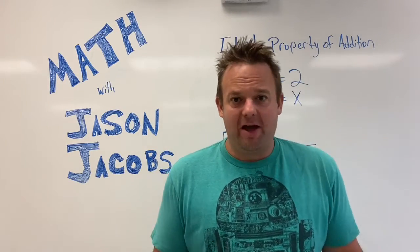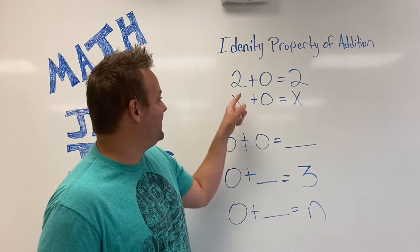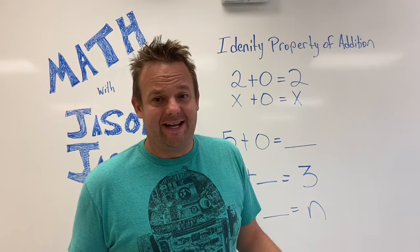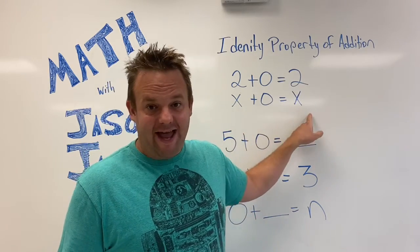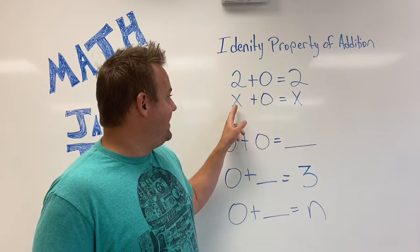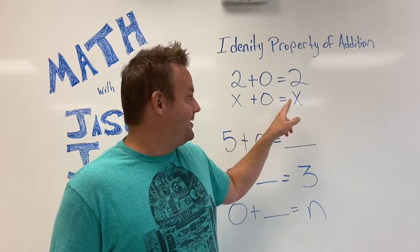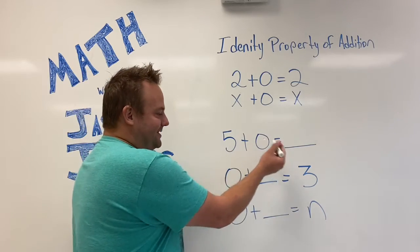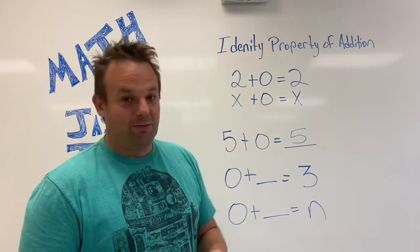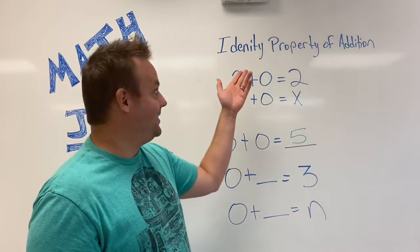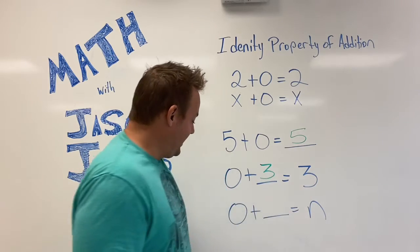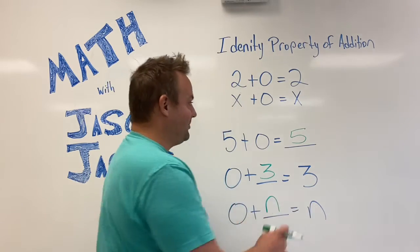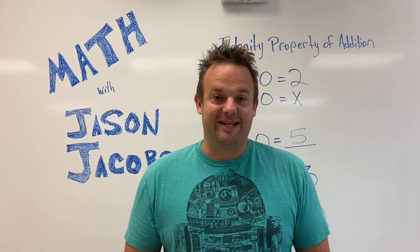Identity Property of Addition. We're going to get done with this one real quick. The Identity Property of Addition says any number — let's say two plus zero is two. Notice when you add zero, it does not change the identity of the number. For example, X plus zero is X. X is an unknown — it's a variable. Five plus zero is five, because of the Identity Property of Addition. Zero plus what is three? That is three. Zero plus what is N? That's right — N. Zero plus N equals N. My name is Jason Jacobs, and this was the Identity Property of Addition.